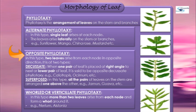Now comes opposite phyllotaxy. In this type, two leaves arise from each node in opposite directions. One node bears two leaves but in opposite directions, and it is of two types: decussate and superposed. In decussate, one pair of leaves is placed at right angles to the next or lower pair of leaves.